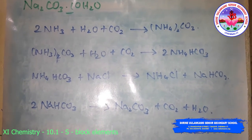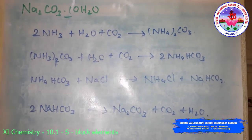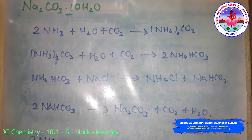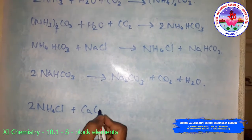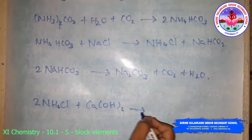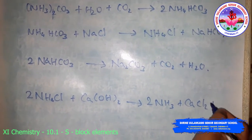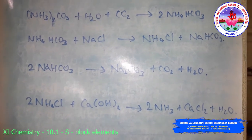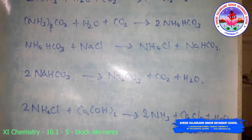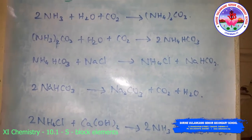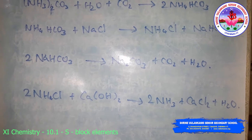In this process, ammonia is recovered when the solution containing ammonium chloride is treated with calcium hydroxide, giving calcium chloride as a by-product: 2NH4Cl + Ca(OH)2 → 2NH3 + CaCl2 + 2H2O. It should be mentioned that the Solvay process cannot be extended to the manufacture of potassium carbonate, because potassium hydrogen carbonate is too soluble to be precipitated by addition of ammonium hydrogen carbonate to a saturated solution of potassium chloride.